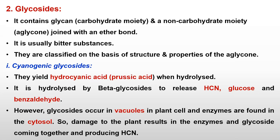The first glycoside is cyanogenic glycoside. After hydrolysis of cyanogenic glycosides, they yield hydrocyanic acid — HCN, or prussic acid. After hydrolysis, they produce hydrocyanic acid and prussic acid; both are the same compound.